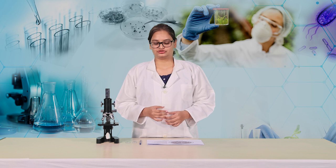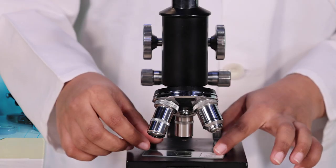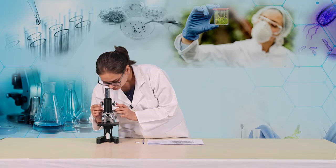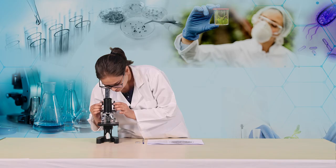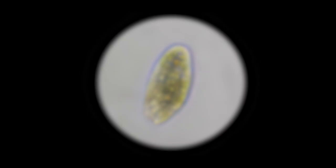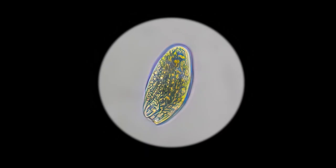Let's take the permanent slide of Entamoeba histolytica and place it under low power of the compound microscope. Let's focus it properly and try to observe the features. We can also observe it under high power of the microscope.